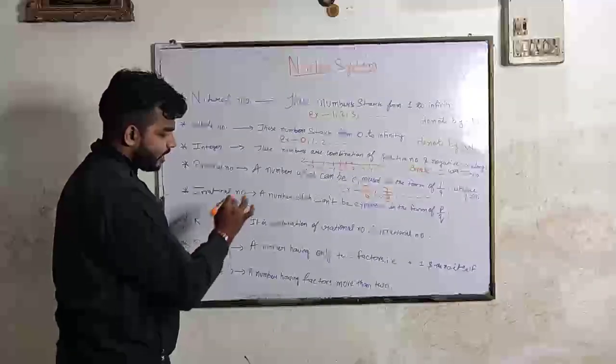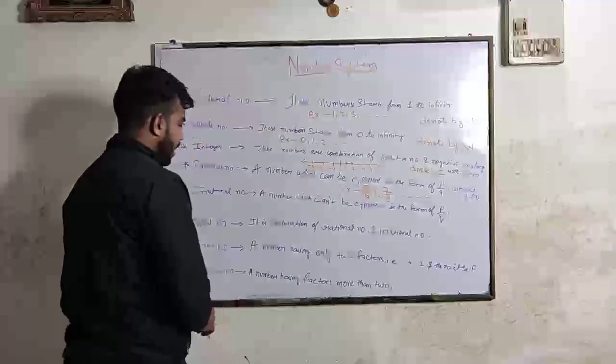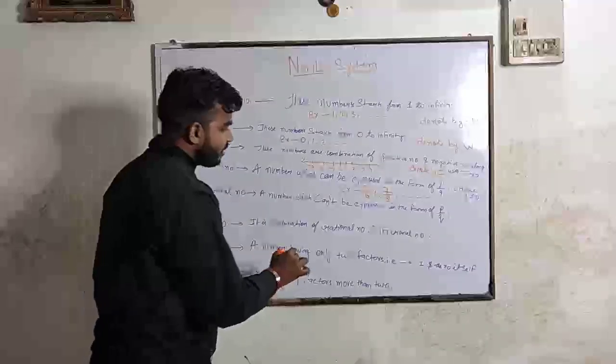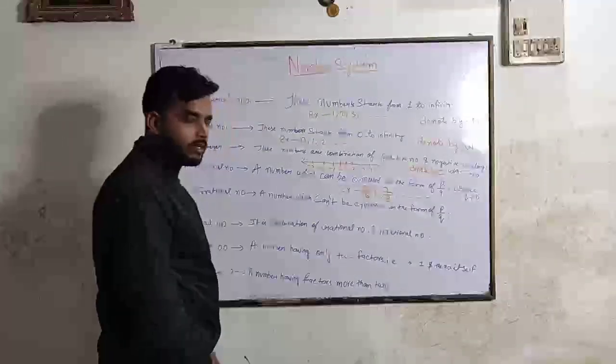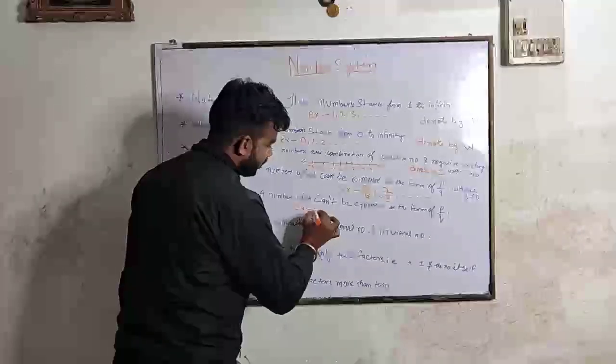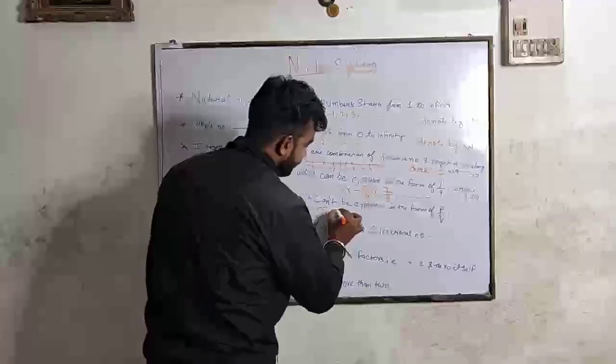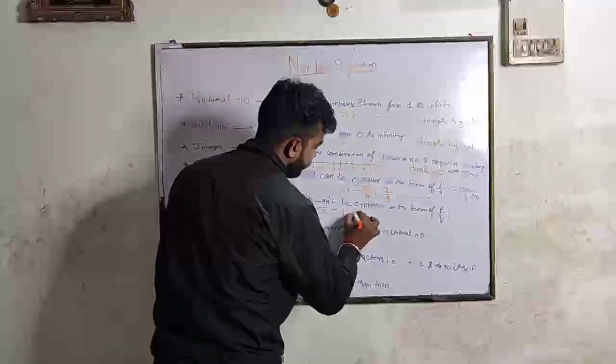And irrational number. A number which cannot be expressed in the form of P by Q. It means a number never be written in the form of P by Q. Example: under root 3, which is solved in the long division method: 1.414.